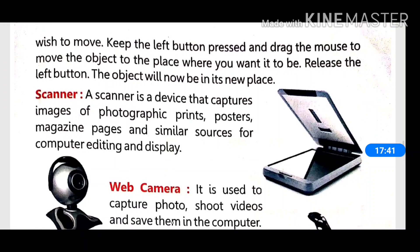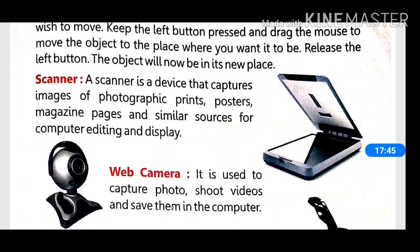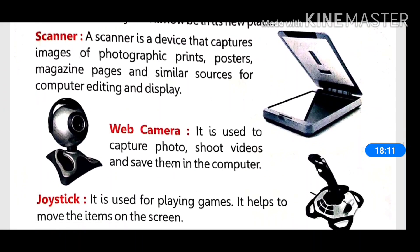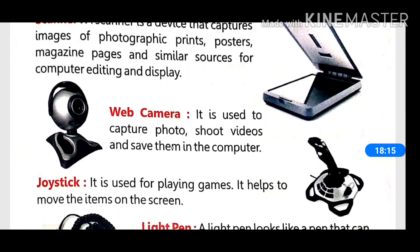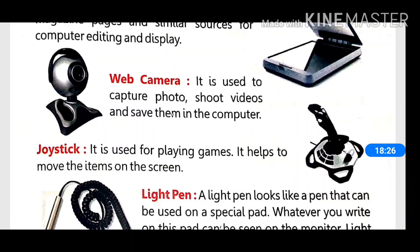Next input device is the scanner. A scanner is a device that captures images of photographs, prints, posters, magazines, and similar sources for computer editing and display. Next is the web camera, which is used to capture photos, shoot video, and save them in the computer. Next is the joystick, which is used to play games — we move our items using the joystick.